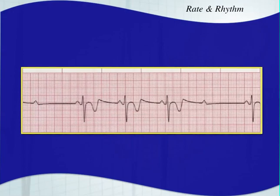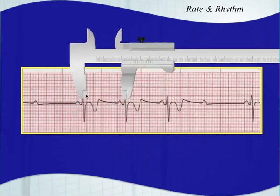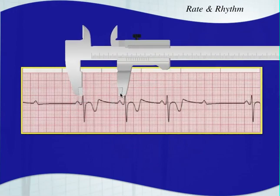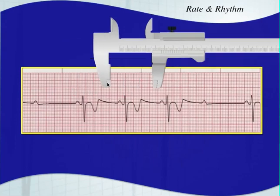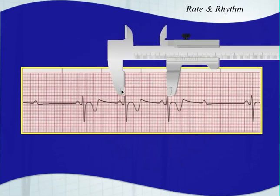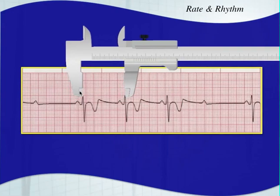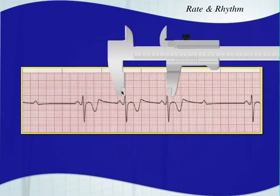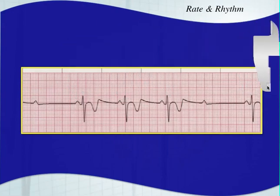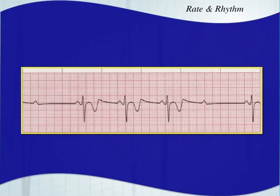We have another one with an obvious irregularity. Measuring from the positive R-wave deflections, these match — there's a good chance this could be a pattern of three beats, but you'd need a longer strip to confirm. It's pretty slow with about four beats, giving a heart rate of about 40 beats per minute.